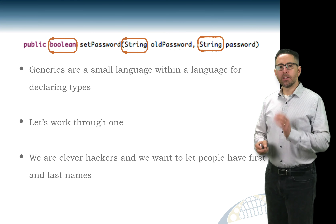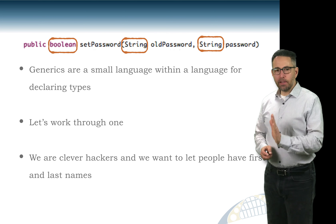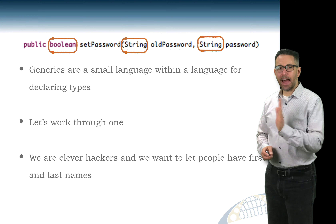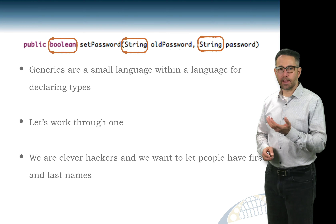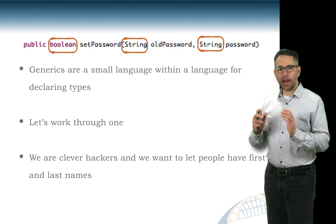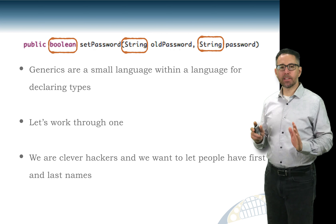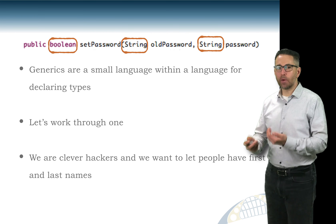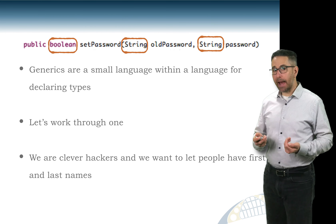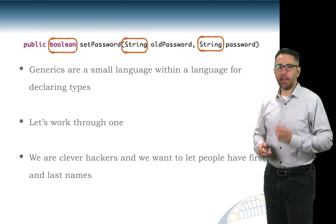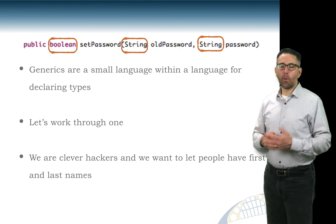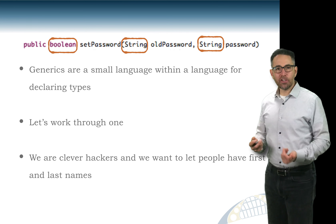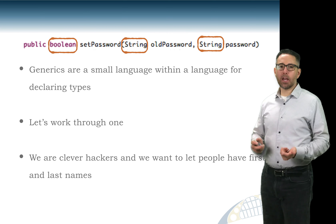We're now making an important distinction. Up to this point we've only looked at using generic classes — for example, creating a Vector or ArrayList and putting the type in angle brackets. That's what someone who uses a generic class does. Now we're moving into how you write a generic class — how you write a class so that someone can call it with any type they want.